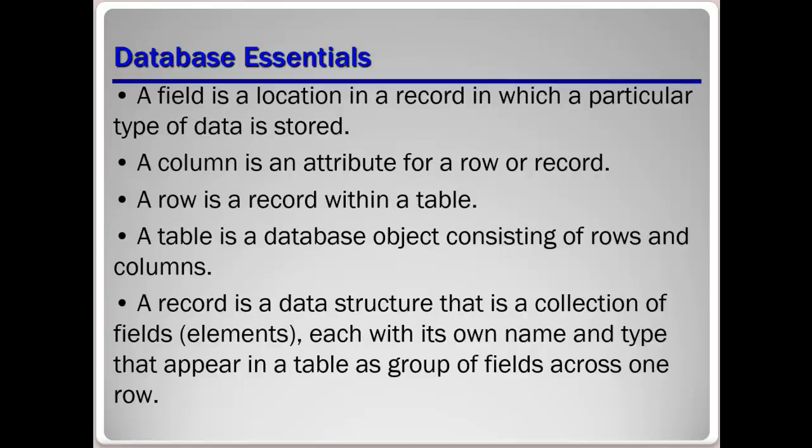A field is a location in a record in which a particular type of data is stored. A column is just an attribute for a row or record. A row is a record within a table — you've probably used Microsoft Excel before. A row goes left to right, those horizontal pieces of information, and a column is the up-and-down or vertical areas, while a field is just the intersection of those two.